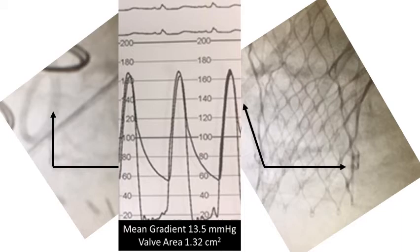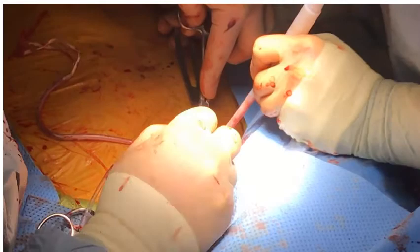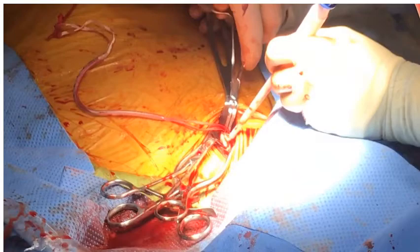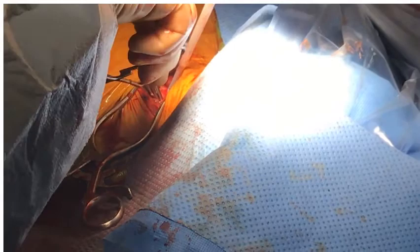This ultimately resulted in the residual gradient decreasing from 28 to 13 millimeters of mercury, with a valve area now of 1.3. The delivery sheath is then removed and the artery flushed. A side benefit of this technique is inherent embolic protection for the brain on the access side. The transverse arteriotomy is closed primarily, and after releasing the proximal clamp, we de-air with a 25-gauge needle and then re-establish flow to the brain.